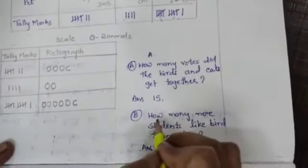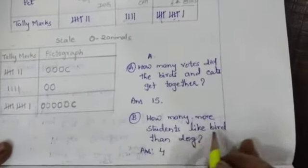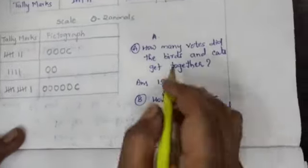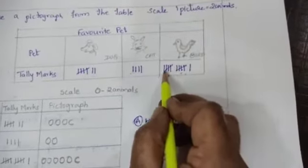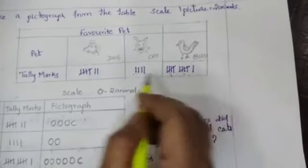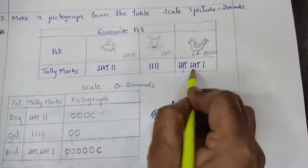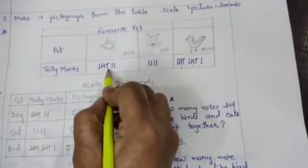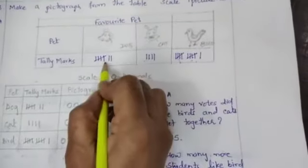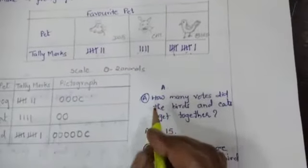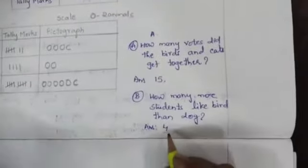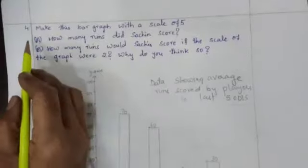Part B: how many more students like bird than dog? So what you have to do children here? Birds they got 11, dog 7. So you have to subtract. So 11 minus 7, how much? 4.